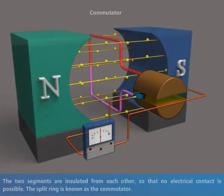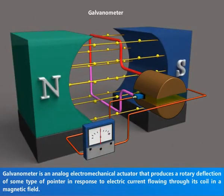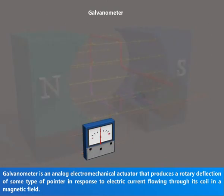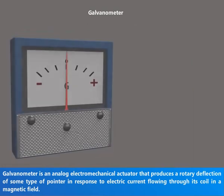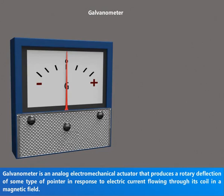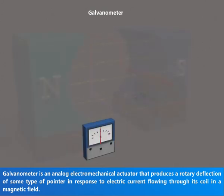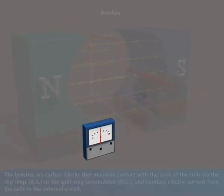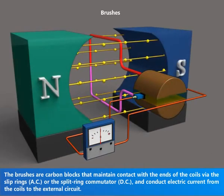The split ring is known as the commutator. The galvanometer is an analog electromechanical actuator that produces a rotary deflection of a pointer in response to electric current flowing through its coil in a magnetic field. The brushes are carbon blocks.